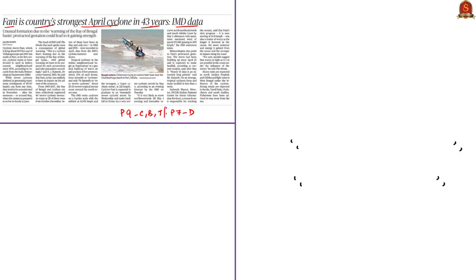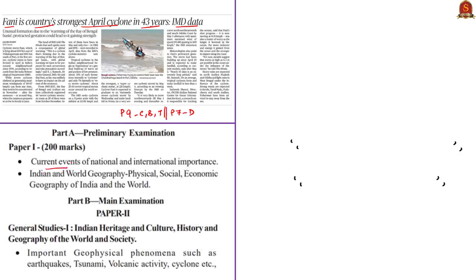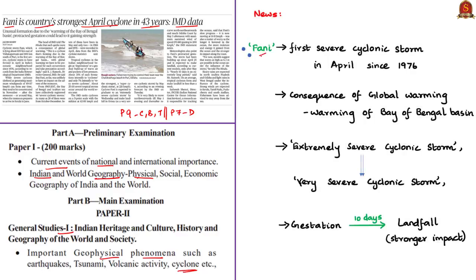The second news article is 'Fani is India's strongest April cyclone in 43 years, say meteorologists.' It appears on page 9 of Chennai, Bengaluru, and Thiruvananthapuram editions, and page 7 of Delhi. This is relevant for prelims under current events and physical geography, and for mains GS Paper 1 under important geophysical phenomena such as cyclones. Cyclone Fani was lying about 600 km east of Visakhapatnam and 800 km south of Puri, and is the first severe cyclonic storm to form in April in India's oceanic neighbourhood since 1976.